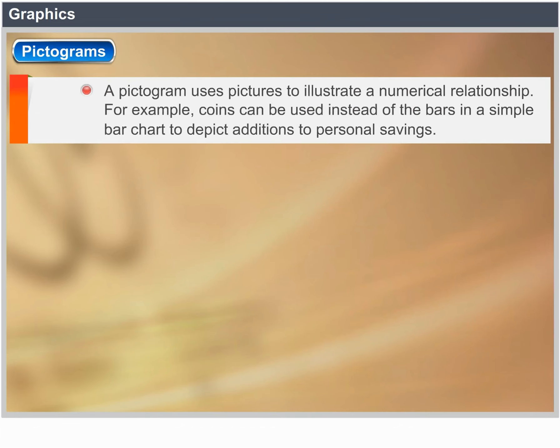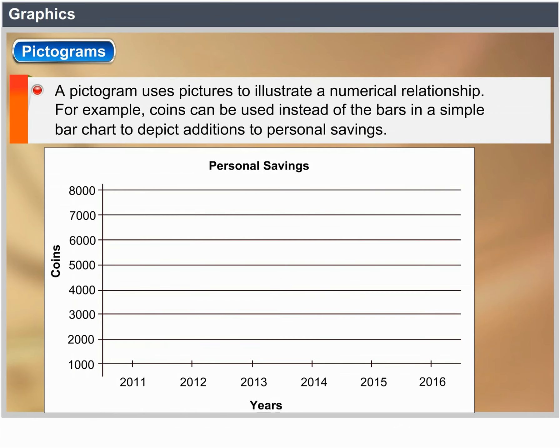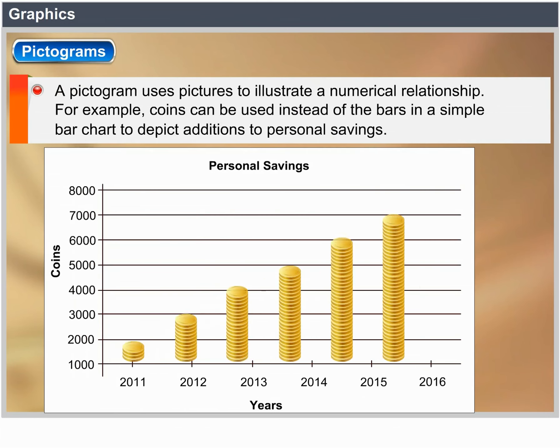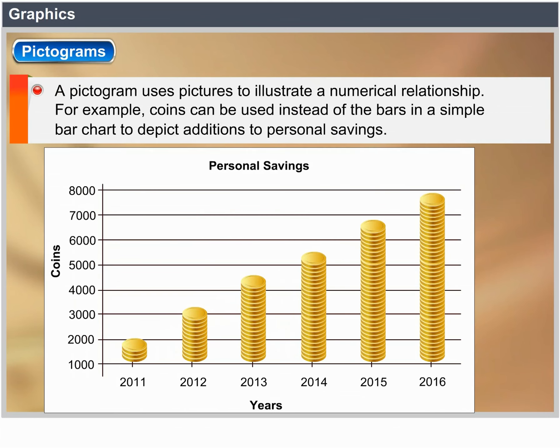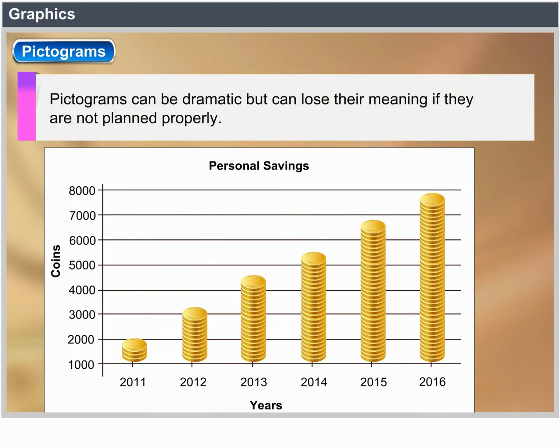Pictograms. A pictogram uses pictures to illustrate a numerical relationship. For example, coins can be used instead of the bars in a simple bar chart to depict additions to personal savings. Pictographs can be dramatic but can lose their meaning if they are not planned properly.